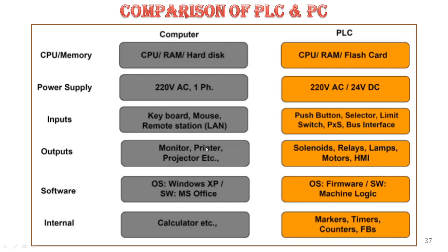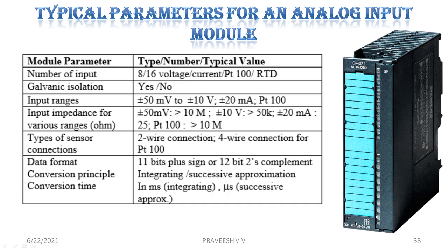PLC outputs go to real-life processes — solenoids, lamps, etc. For software, computers use an OS like Windows and Office applications, while PLCs use firmware, machine logic, and similar tools. Both also support ADC.